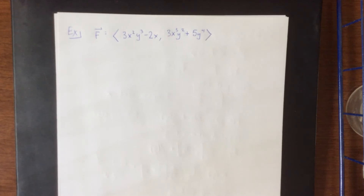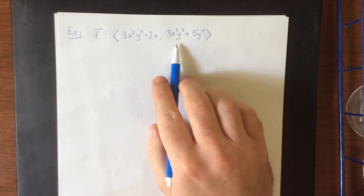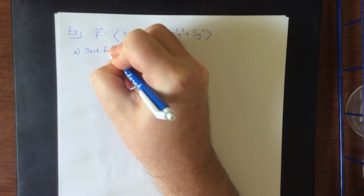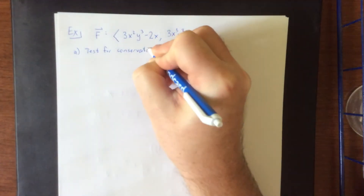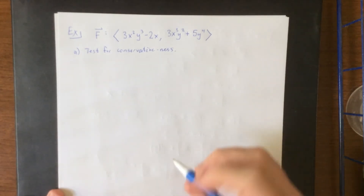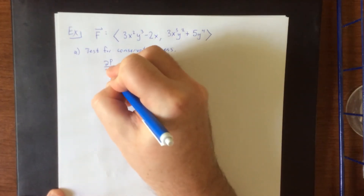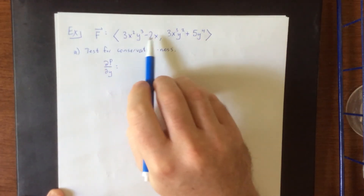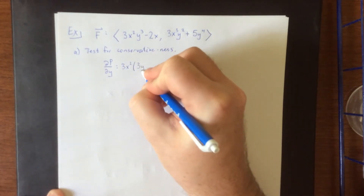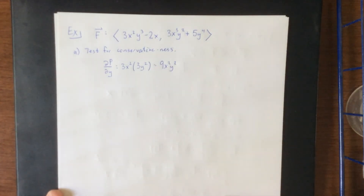I wanted to demonstrate this process once because it's really not as bad as the notation makes it look. Here is a vector field: F equals (3x²y³ − 2x, 3x³y² + 5y⁴). First thing I'd like to do is test for conservativeness. Referring to the first component as p and the second as q, we take the partial derivative of p with respect to y — treating y as the variable and x as the constant — which gives us 3x² times the derivative of y³, which is 3y², and the −2x term goes away. That leaves us with 9x²y².